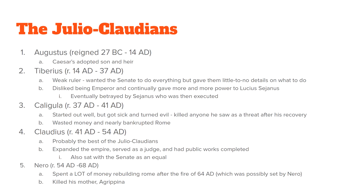Caligula wasted a lot of money and basically bankrupted Rome. Once Caligula was out of the way, Claudius took over. He was probably the best of the Julio-Claudians because he tried to rule fairly — he would sit in the Senate and listen to all sides, and served as a judge while emperor. But eventually he died too and Nero took over.